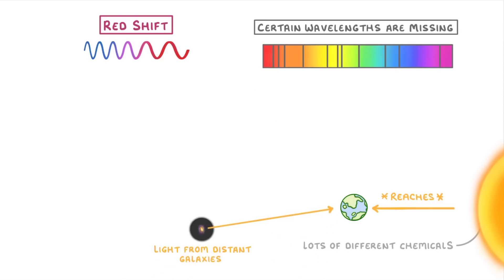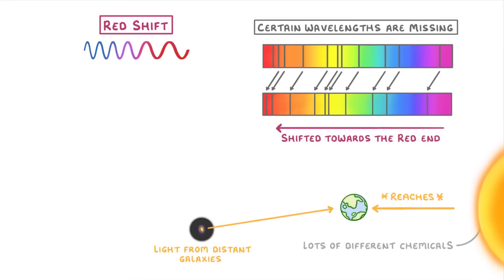When we analyze light from distant galaxies, though, we find that their spectra look more like this, with the black lines in exactly the same pattern, but all shifted towards the red end of the spectrum.